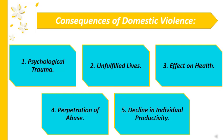The fourth consequence is the perpetration of abuse. It is possible that young children exposed to environments filled with violence may believe such behaviors to be the norm. For example, young boys may then believe it is their right to physically abuse their girlfriend or wife later in life, or girls who think it is necessary for them to be submissive to their husband.